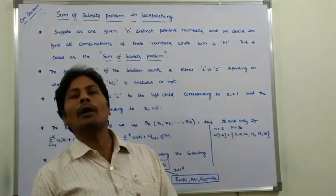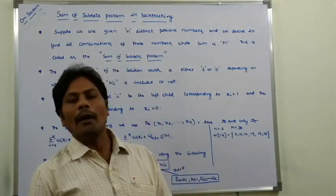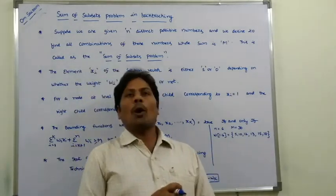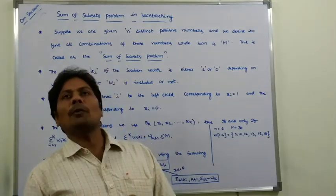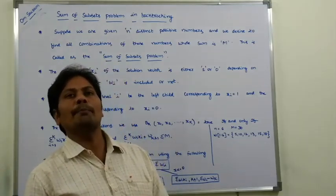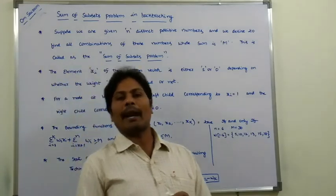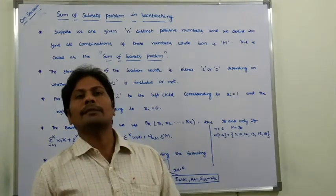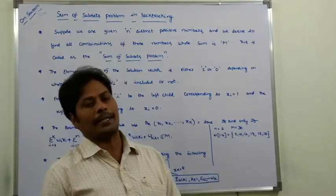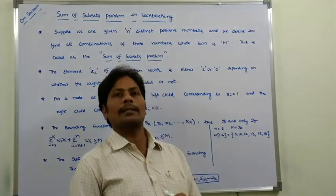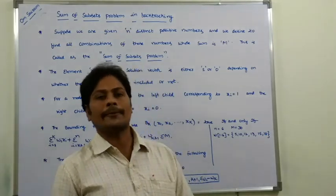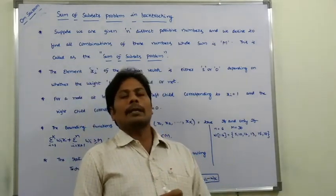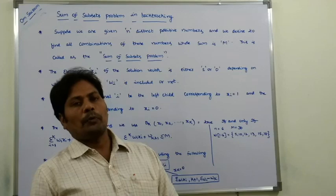For this problem, we have to find out all the solutions. For finding the solution using backtracking, we use two strategies. One is the fixed tuple size strategy, and the second one is the variable tuple size strategy. In the fixed tuple size strategy, the tuple size is fixed. In the variable tuple size strategy, the tuple size is varied.